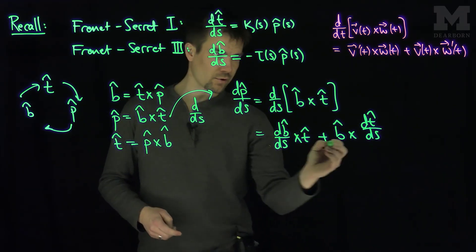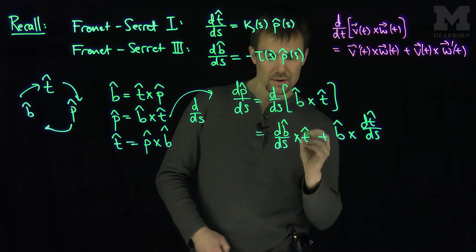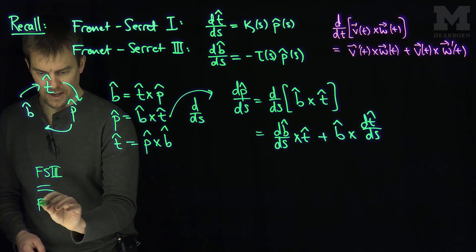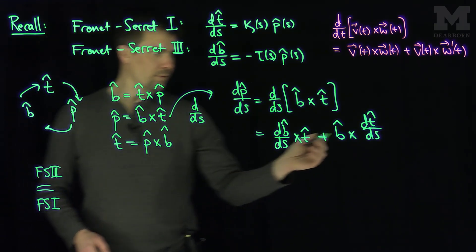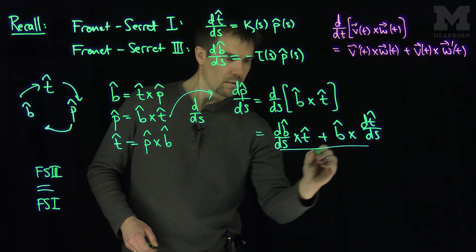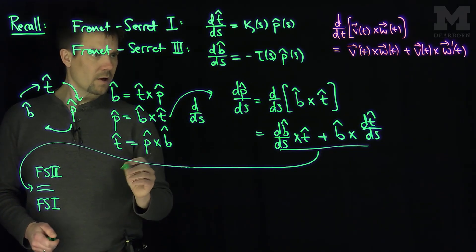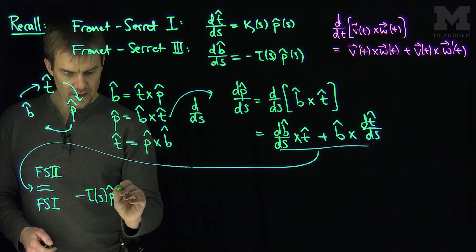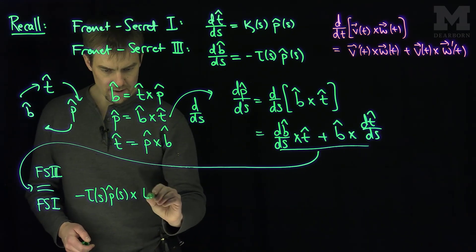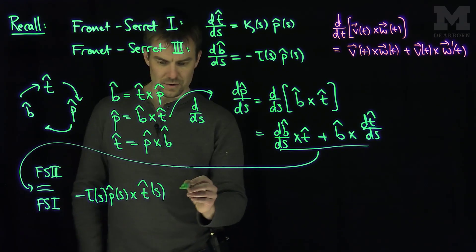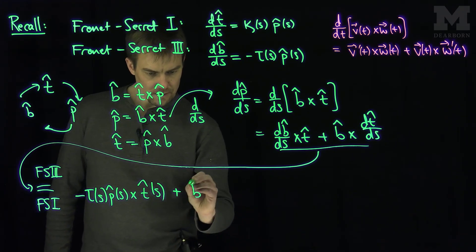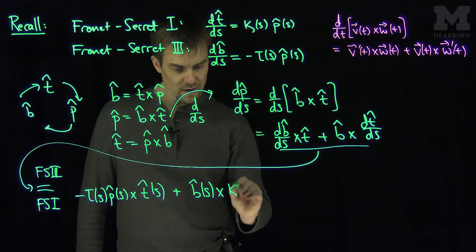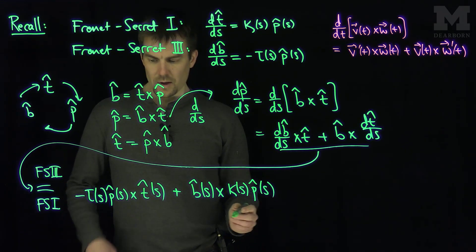Now we can use Frenet-Serret 3 on the first term and Frenet-Serret 1 on this term over here. So by Frenet-Serret number 3 and Frenet-Serret number 1, we see that this is equal to db ds is negative torsion, negative torsion of s, p hat of s, cross t hat of s. And these are all functions of the arc length parameter. Then plus b hat, that's of course of s, cross dt ds is curvature p hat, curvature of s, p hat of s.